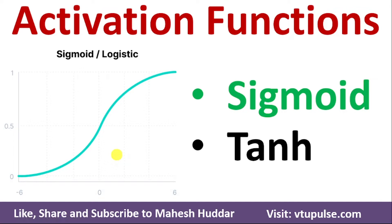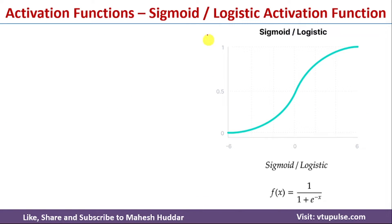Welcome back. In this video I will discuss sigmoid and tanh activation functions with a simple numerical example. In the previous videos I discussed what activation functions are and why we need them, including softmax and variations of ReLU like leaky ReLU and parametric ReLU. Links for those videos are given in the description below. First we will discuss the sigmoid or logistic activation function.